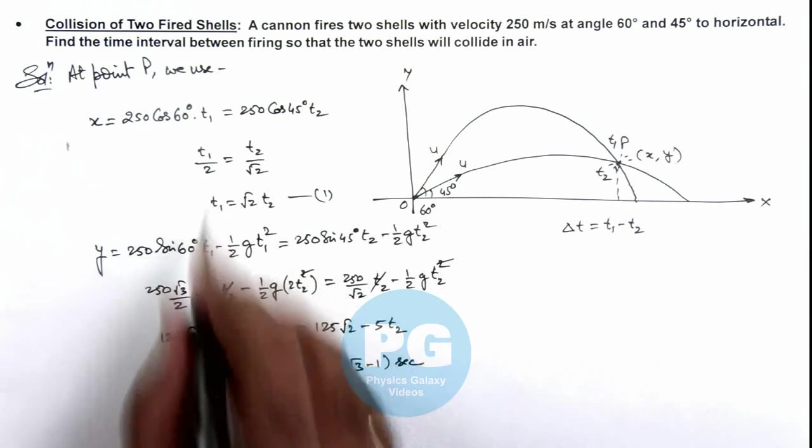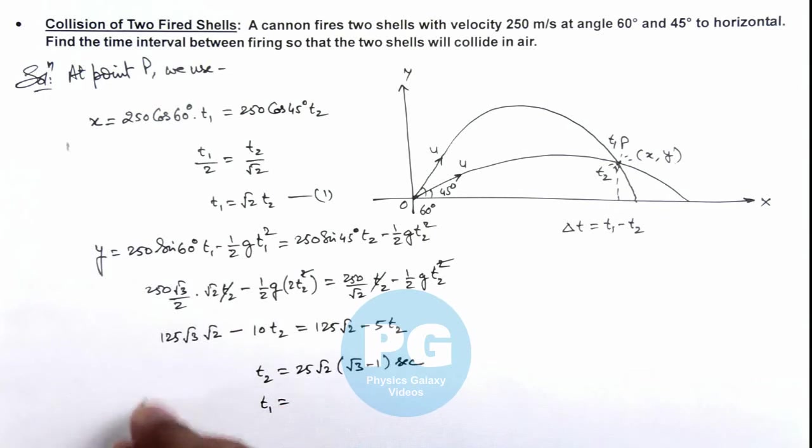So if this is t₂, on substituting here we can get the value of t₁ from equation 1. If we substitute the value of t₂ here, this will be 50(√3 - 1) seconds.